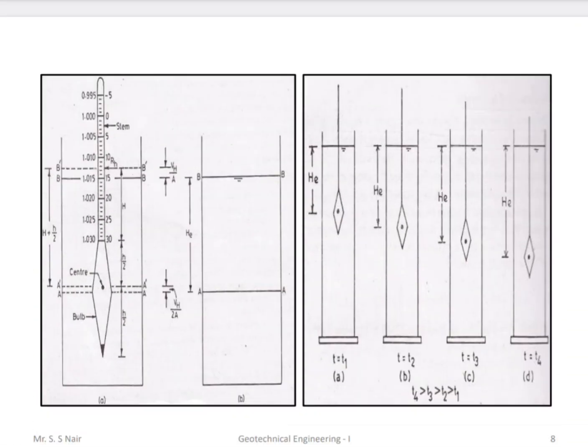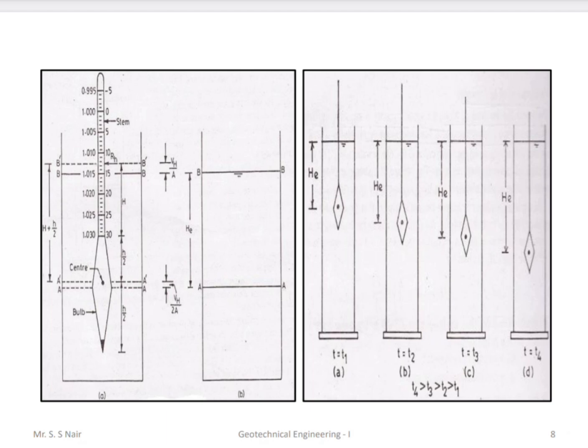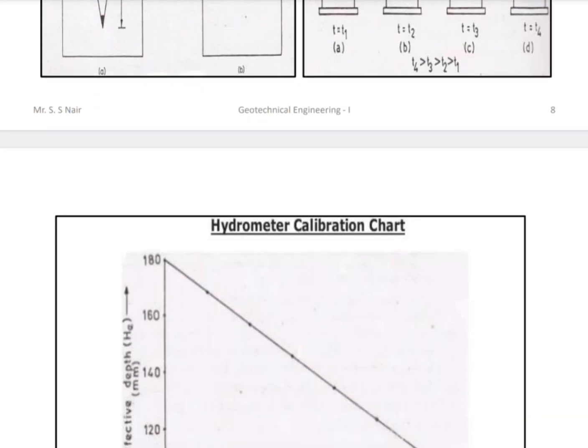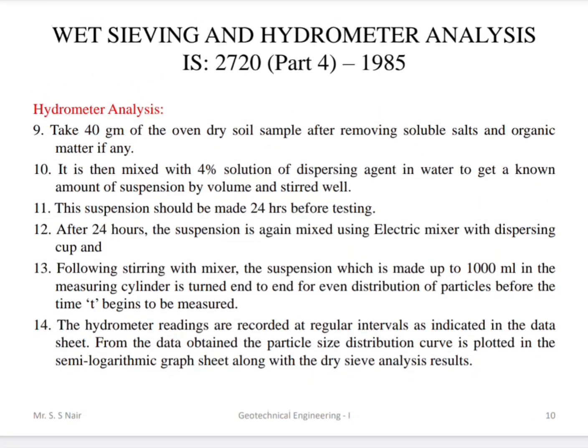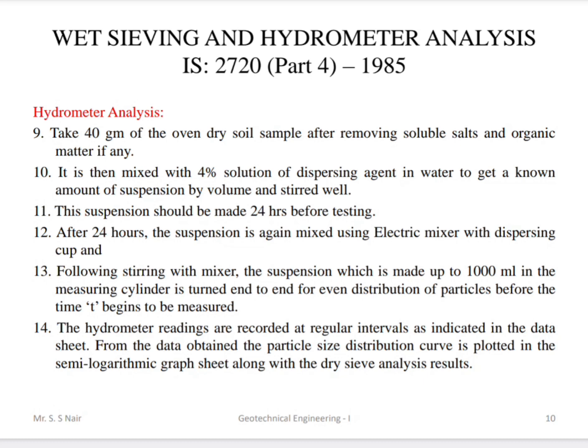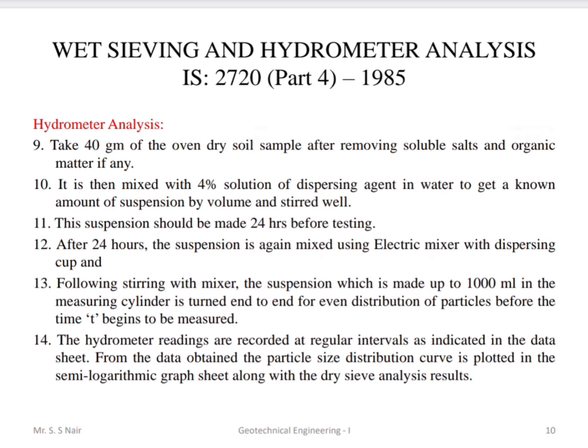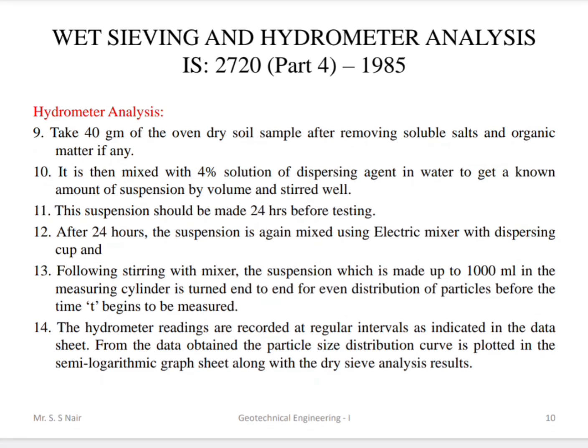Here you can see the hydrometer dipped at different intervals. For hydrometer analysis, 40 grams of oven-dried soil sample is taken after removing soluble salts or organic matter. It is then mixed with a 4% solution of dispersing agent — sodium hexametaphosphate — and the suspension should be prepared 24 hours before testing.